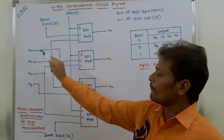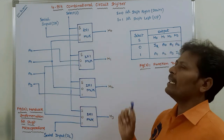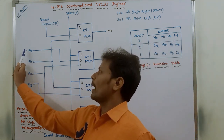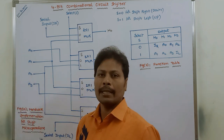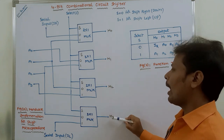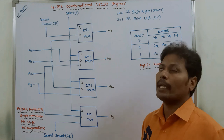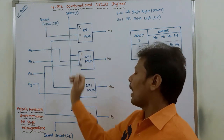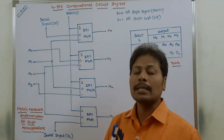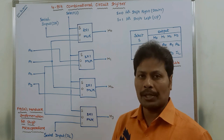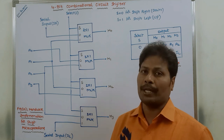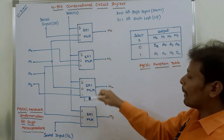Now consider figure A. The 4-bit combinational circuit shifter contains 4 data inputs A0, A1, A2, and A3, and 4 data outputs H0, H1, H2, and H3, and 2 serial inputs. One is IR and the second one is IL. IR is the serial input for shift right operation. IL is the serial input for shift left operation, and there are four multiplexers.